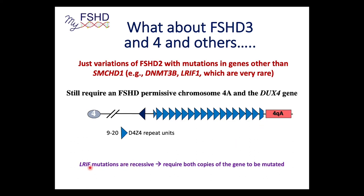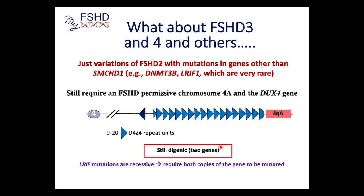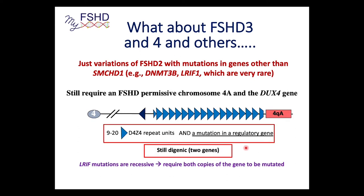One caveat: LRIF1 mutations are recessive, meaning you need two LRIF1 mutations, whereas you only need one SMCHD1 mutation or one DNMT3B mutation. So LRIF1 could maybe be called FSHD3. They function like FSHD2 — both are regulatory proteins of this region, always digenic, always requiring a mutation in a regulatory gene.